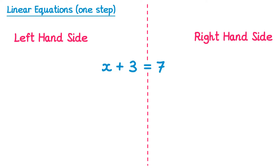On the left hand side we have two terms: the x and also plus 3. In order to solve this we want just x on the left hand side, which means we need to do something about this plus 3. The inverse or opposite of adding 3 is subtracting 3, so we're going to subtract 3 from both the left side and the right side. We'll draw an equal sign and subtract 3 from each side.